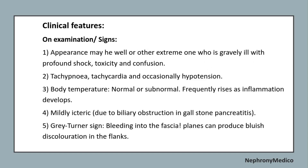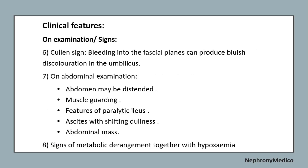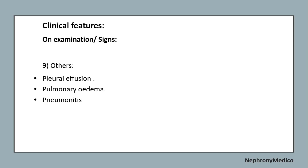On examination, appearance may range from well to extremely ill. Tachypnea, tachycardia, and occasional hypotension may be present. Body temperature may be normal or subnormal. The patient may be mildly icteric. Grey Turner's sign — bluish discoloration in the flanks due to bleeding into the fascial planes — may be present. Cullen's sign — bluish discoloration in the umbilicus due to bleeding into the fascial planes — may also be seen. On abdominal examination, the abdomen may be distended with muscle guarding, features of paralytic ileus, ascites with shifting dullness, and abdominal mass. Signs of metabolic derangement together with hypoxia, pleural effusion, pulmonary edema, and pneumonitis may be present.